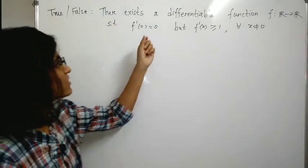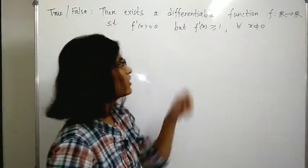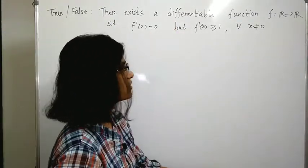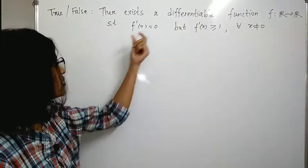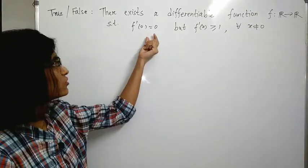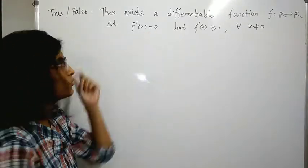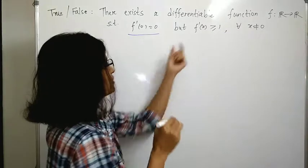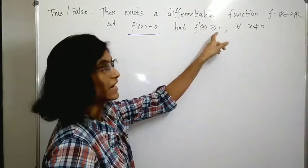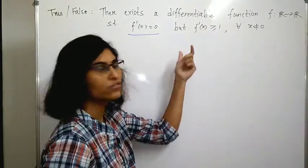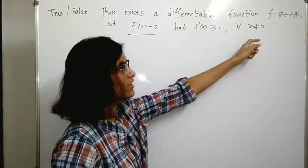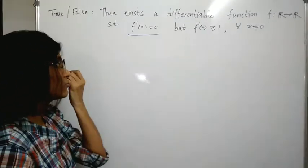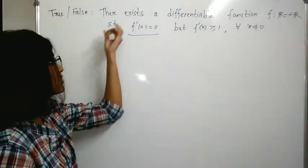The first question is true or false. The statement is: there exists a differentiable function f from ℝ to ℝ such that f'(0) = 0 but f'(x) ≥ 1 for all x which are non-zero. We just have to check whether this statement is true or not.